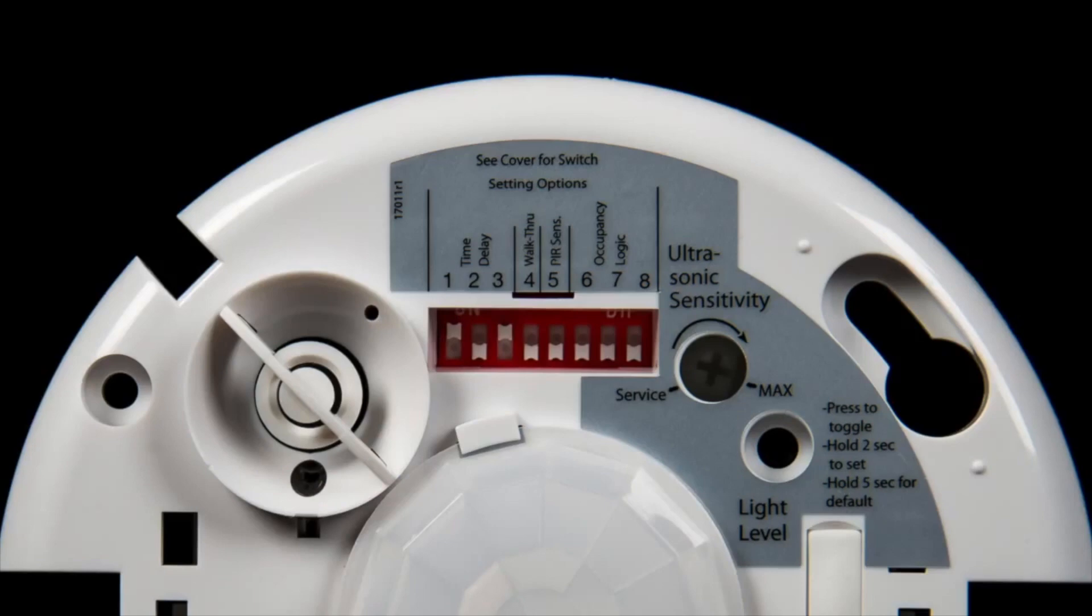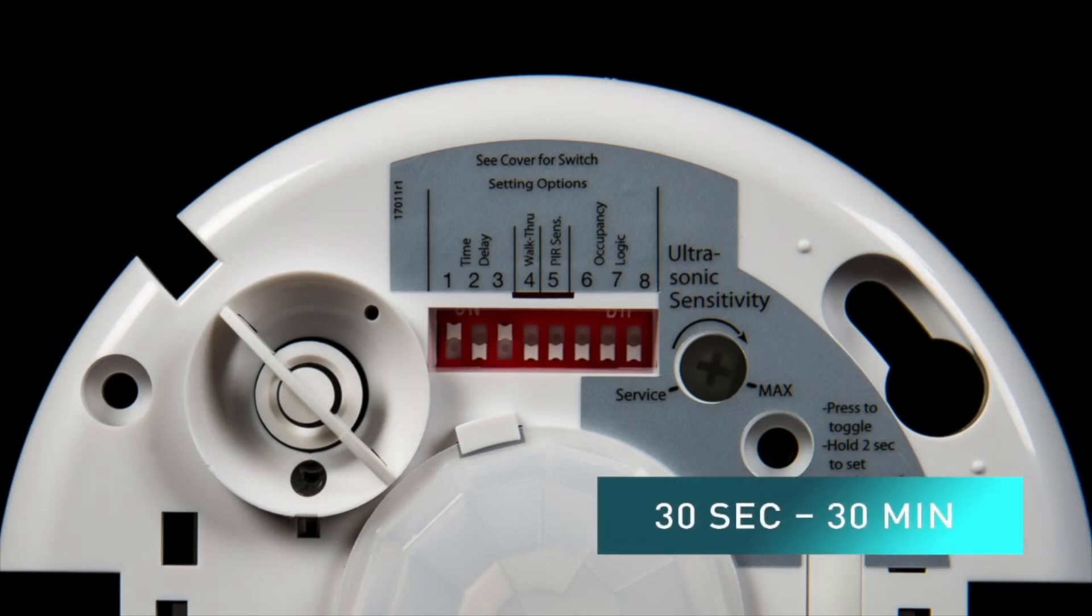The dip switches allow for the adjustment of the time delay as well as other possible set point adjustments on the product. Notice that dip switches one through three allow for adjustment of the time delay specifically. Those adjustments can be made from 30 seconds all the way up to 30 minutes.